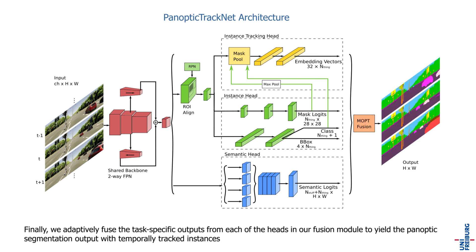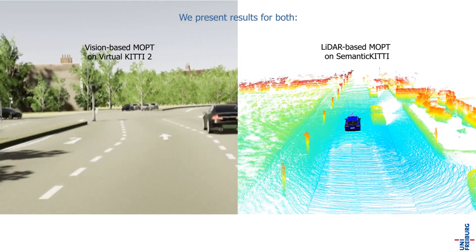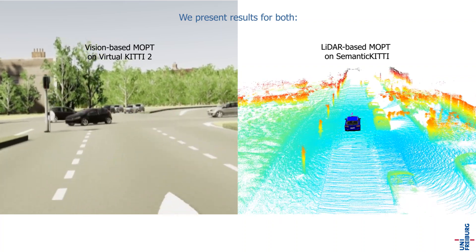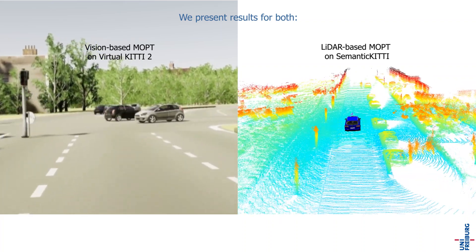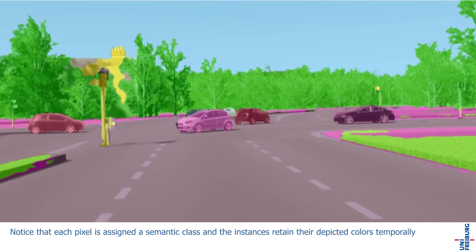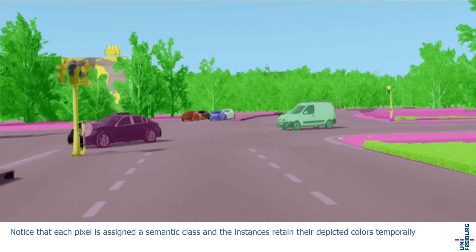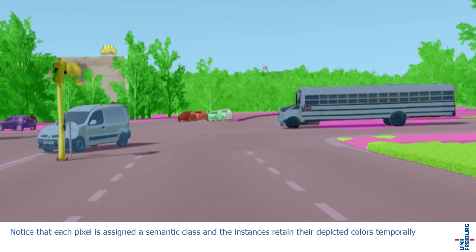Finally, we adaptively fuse the task-specific outputs from each of the heads in our Fusion module to yield the Panoptic Segmentation output with temporally tracked instances. We present results for both vision-based MOPT on Virtual Kitty 2 and LiDAR-based MOPT on Semantic Kitty. Notice that each pixel is assigned a semantic class and the instances retain their depicted colors consistently over time.